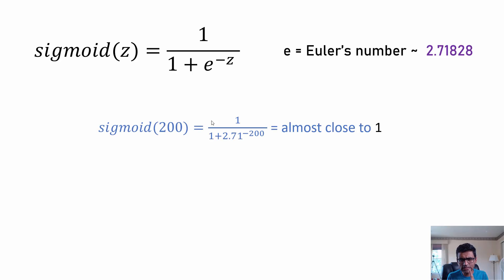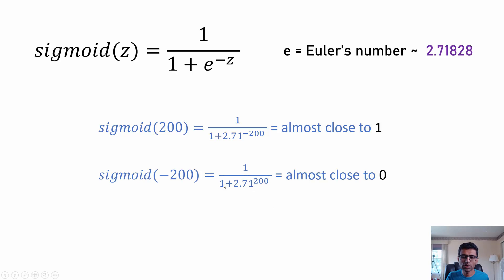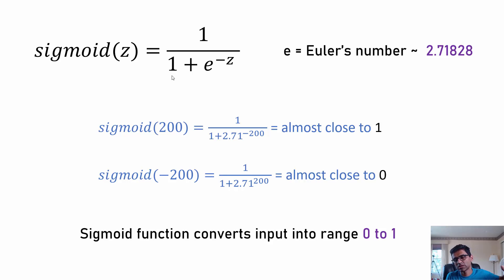Let's look at this function carefully. If you plug in z = 200, the term e^(-200) becomes very small, so 1 divided by something just slightly greater than 1 gives a value almost equal to 1. If you have a large negative number, the denominator becomes very large and the output approaches 0. So the sigmoid function takes any input and converts it to a value between 0 and 1 — large positive values max out to 1, large negative values max out to 0.